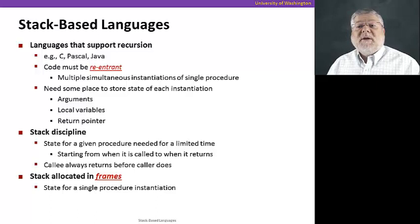To make it possible to support recursion in a programming language, code must be what we call re-entrant, meaning that we can have simultaneous instantiations of a single procedure. What does that mean? That means that we've just called a procedure and in the middle of executing it, and then that procedure can call itself again and start executing a new copy of itself.